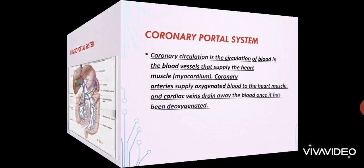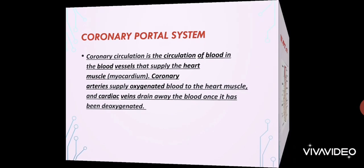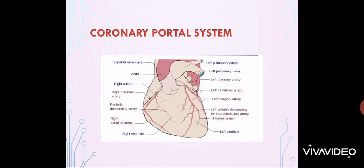You can see the hepatic portal system diagram here. Now, the coronary portal system. Coronary circulation is the circulation of blood in the blood vessels that supply the heart muscles, or myocardium. Coronary arteries supply oxygenated blood to the heart muscles, and cardiac veins drain away the deoxygenated blood. You can draw the coronary portal system diagram from here.